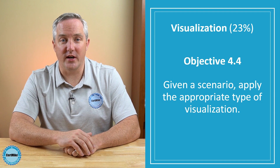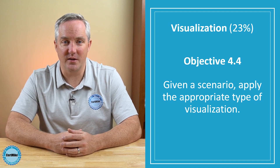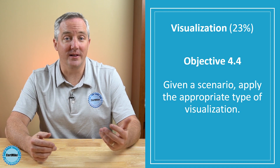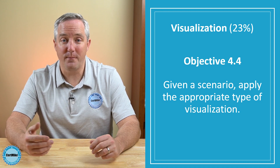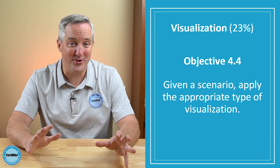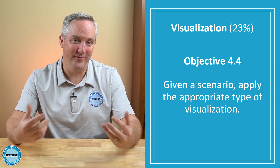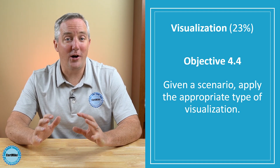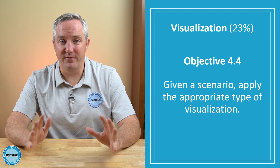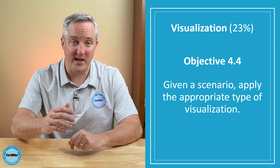The fourth objective asks you to apply appropriate visualization types. You'll need to know how to create and interpret line charts, pie charts, bubble charts, scatter plots, bar charts, histograms, and other visualization types. I'll show you examples of each type of visualization that you'll need to understand in both the video course and my book.